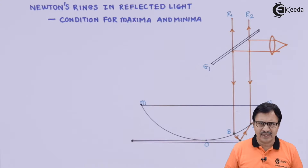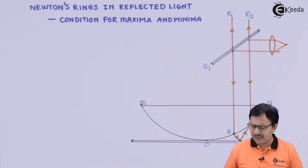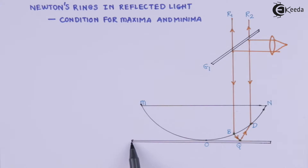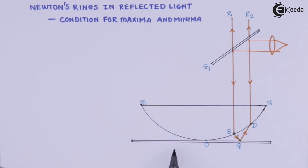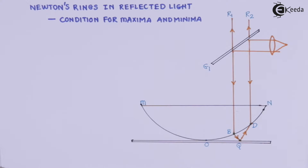Now, how are Newton's rings formed? For understanding this you have to consider the figure. They are formed when we have a plane glass surface, and on this plane glass surface we place a plano-convex lens. The radius of curvature here is very large — we have exaggerated it, but in reality you need a very large radius of curvature to observe Newton's rings.